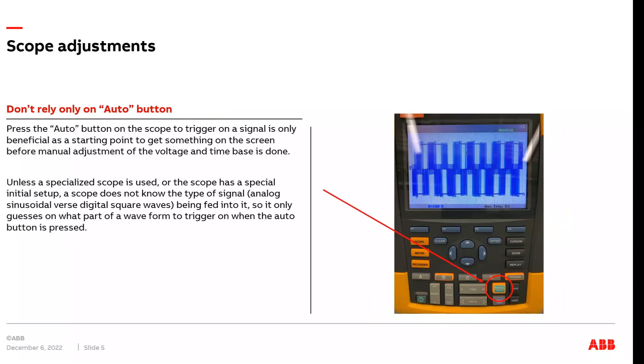For people who use a scope for the first time, it's very easy to rely on the auto button to get an image on the screen and for then all measurements and analysis to be done from that point. When an auto button is pressed, a scope will just trigger on what the signal it thinks you are attempting to see or looking for, when in reality it may not be the actual part of the signal you're looking at or wanting to see. I use the auto button to initially get an image on the screen, but I then adjust the time base and magnitude level to get to the point of the signal I'm actually trying to analyze.